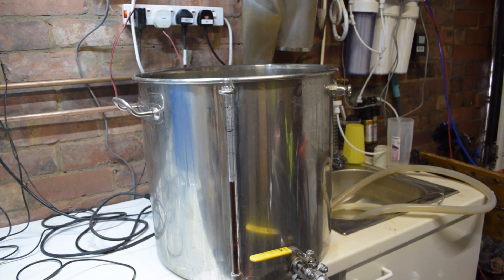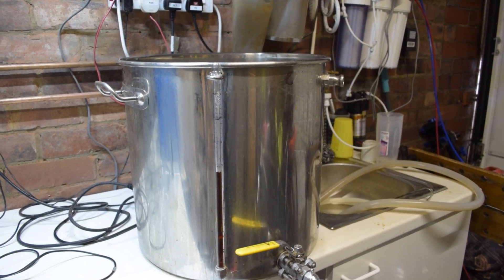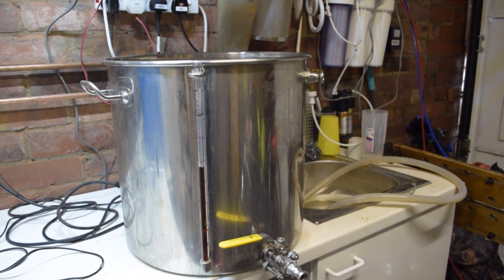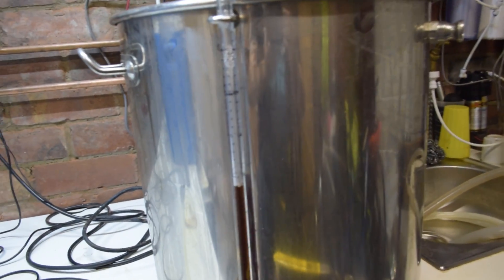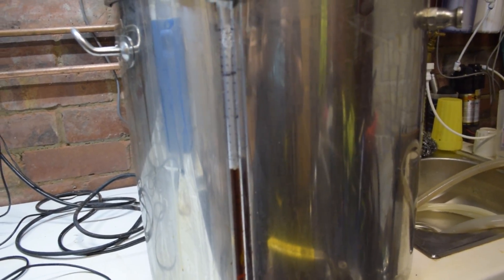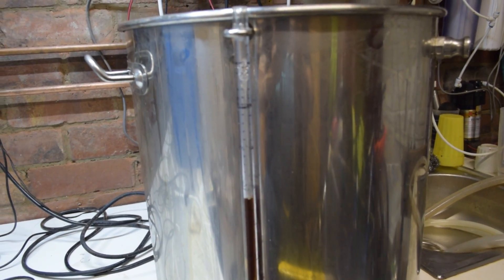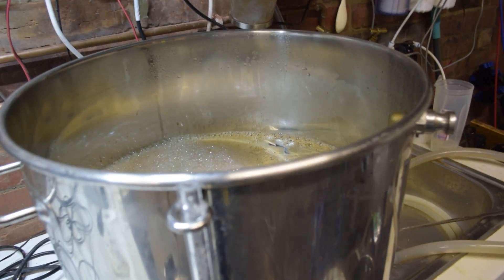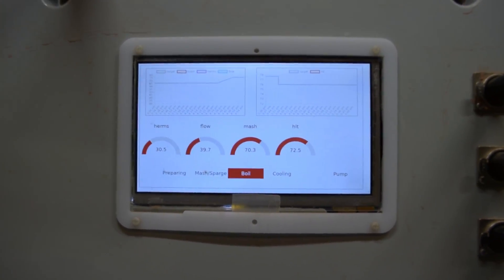Right, and now the sparge is over and I've transferred the wort into what's now the boiler, what was the HLT. As you can see, we've got 28-ish litres. I'm actually going to boil this down a little bit to start with since I'm going to be pitching a 2-litre starter into it. As you can see it's coming up to temperature. So the controller is now in boil mode.